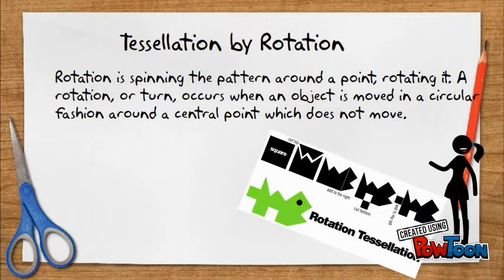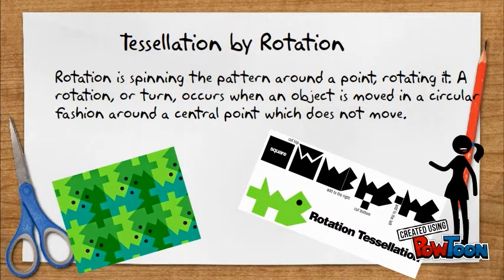Tessellation by Rotation. Rotation is spinning the pattern around a point. A rotational turn occurs when an object is moved in a circular fashion around a central point which does not move.